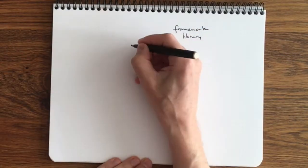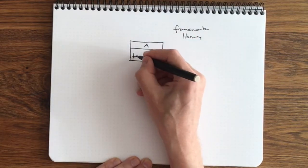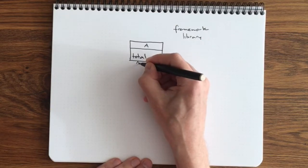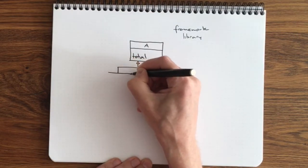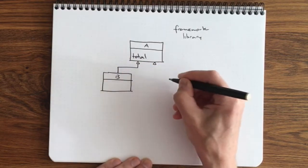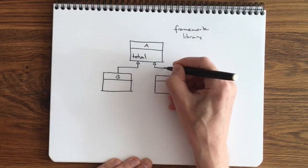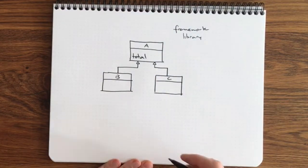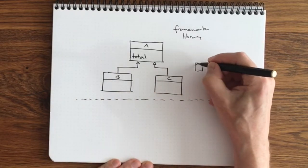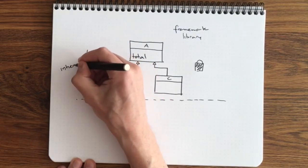We're going to look at another scenario. We found some framework or library online and we're going to use it. This framework has a superclass A which has our total property, and the framework inherits class B and C from A. So B and C also have this total property. Now we cannot change this code or we don't want to change the code. This is all regular inheritance.